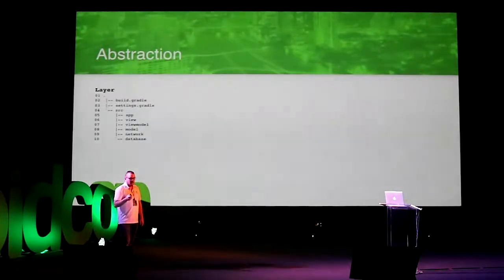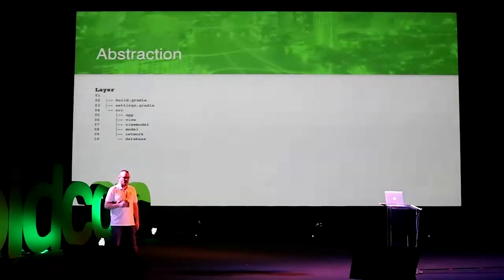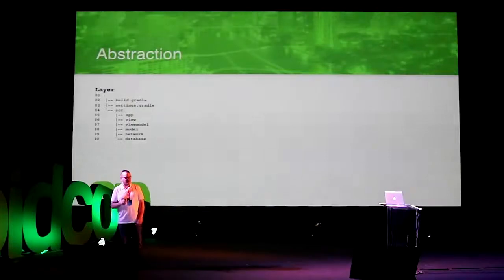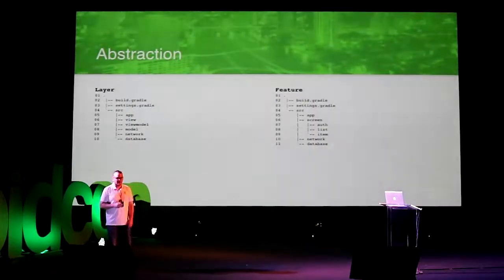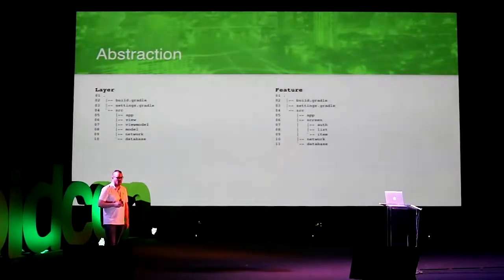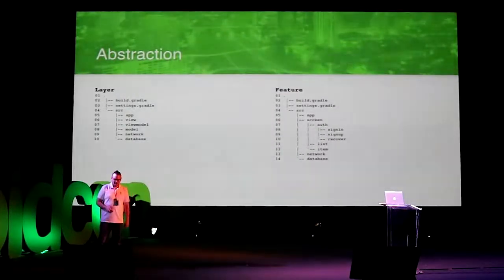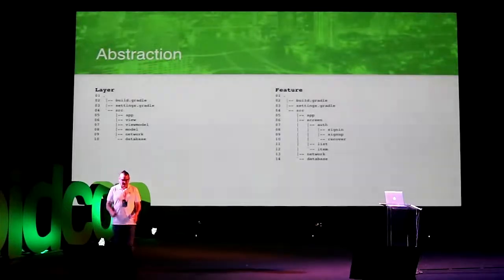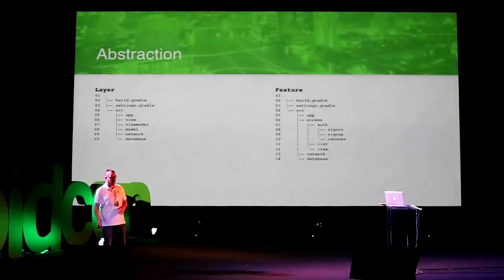Abstraction is actually the coolest thing about feature-based grouping. How many of you can say what a given app is about just from a flat layer-based package structure? Probably no one — I wrote it and still can't say. But with feature-based grouping, just looking at the packages you can see: there is authentication, a list, an item. Expanding the authentication package you can see it has sign-up, sign-in, and recovery — and we are still not looking at a single class file. This makes it easier to navigate, easier to find, and easier to work with.